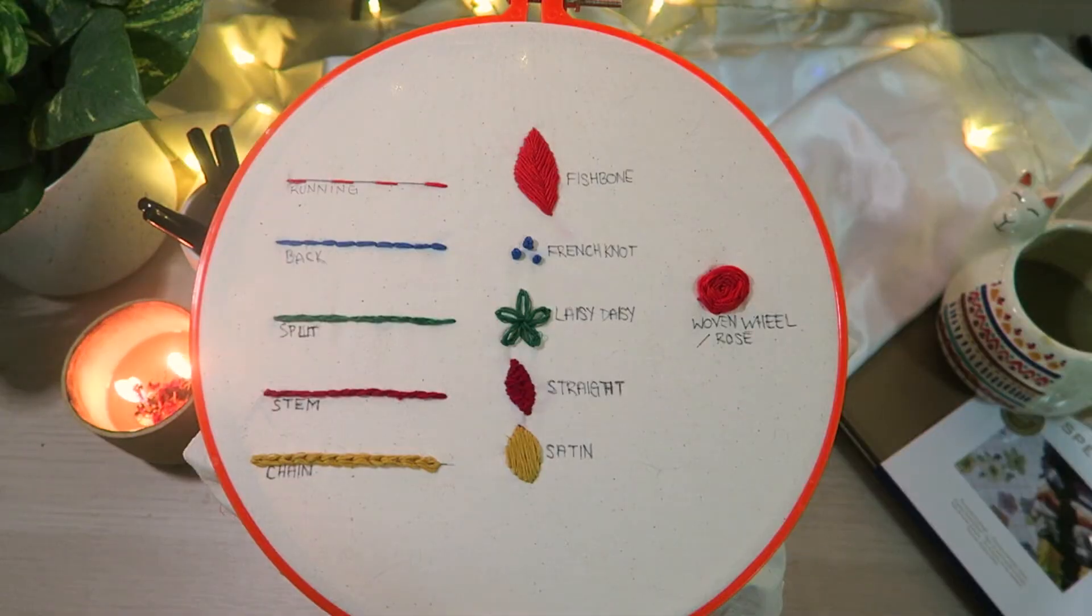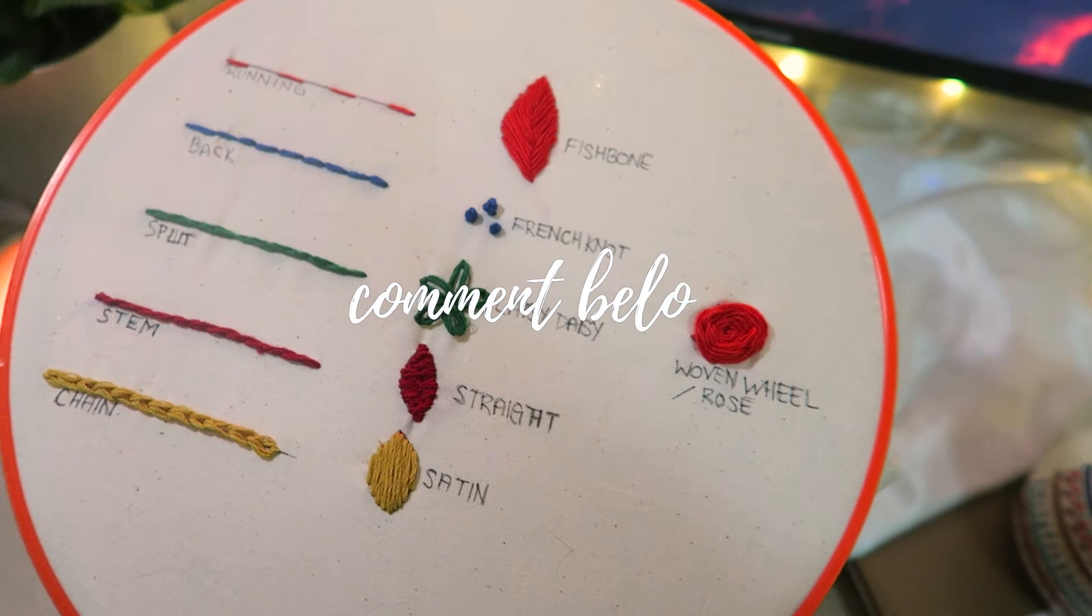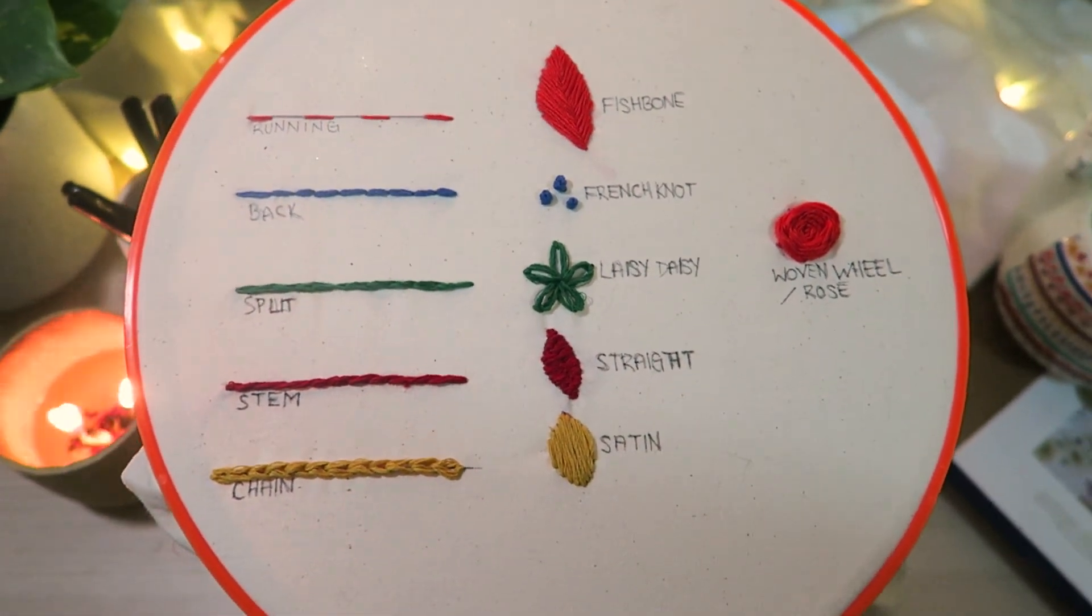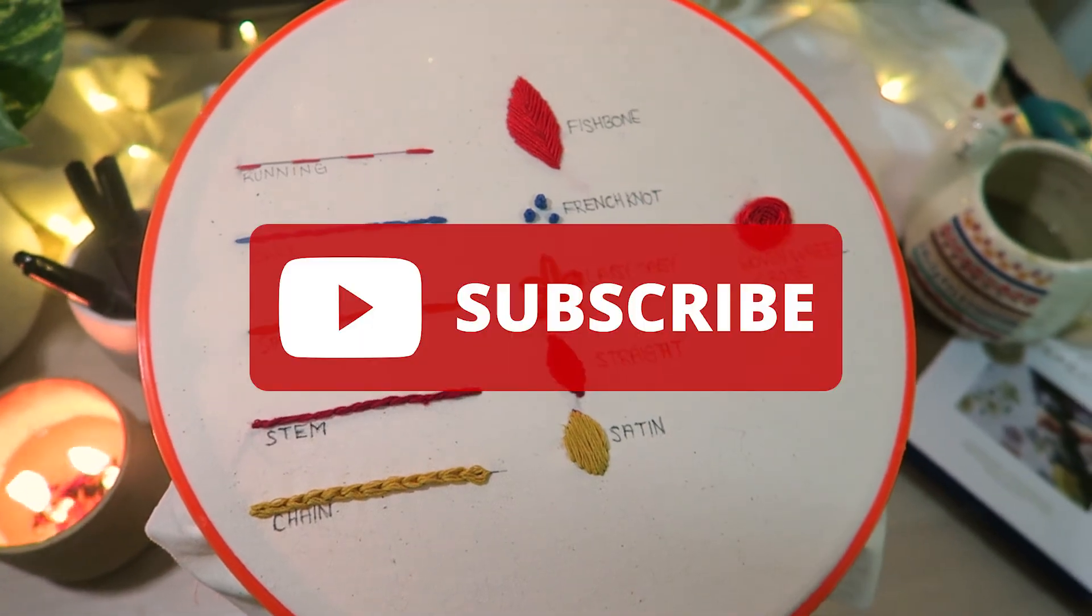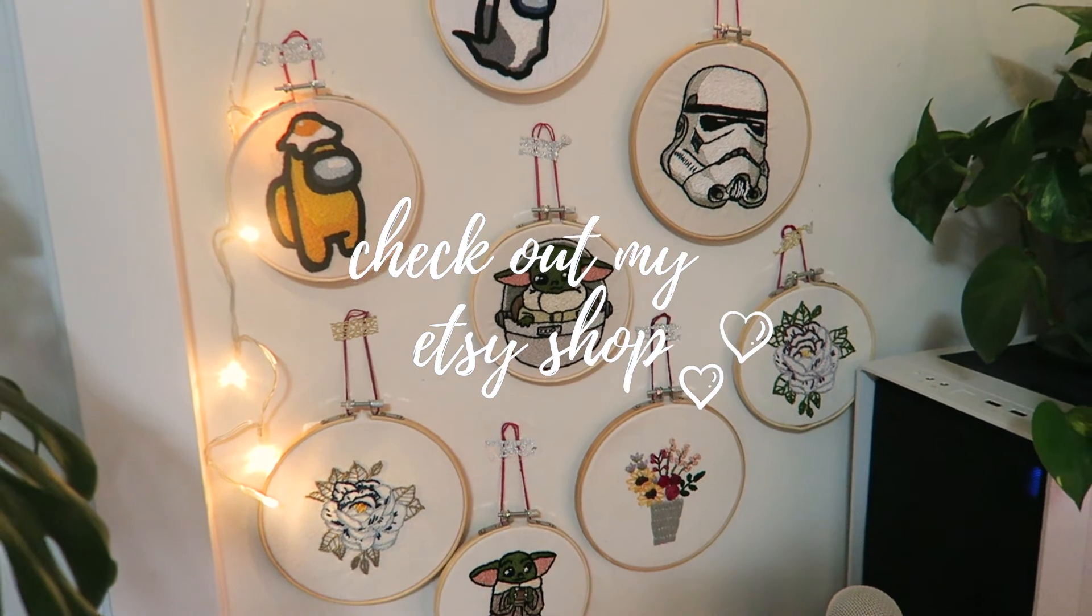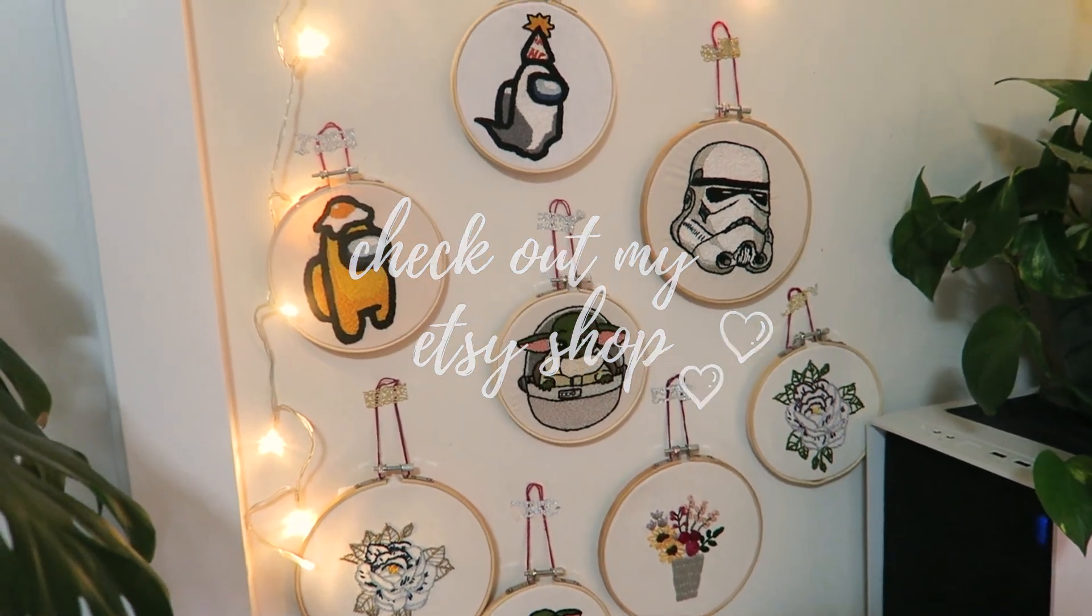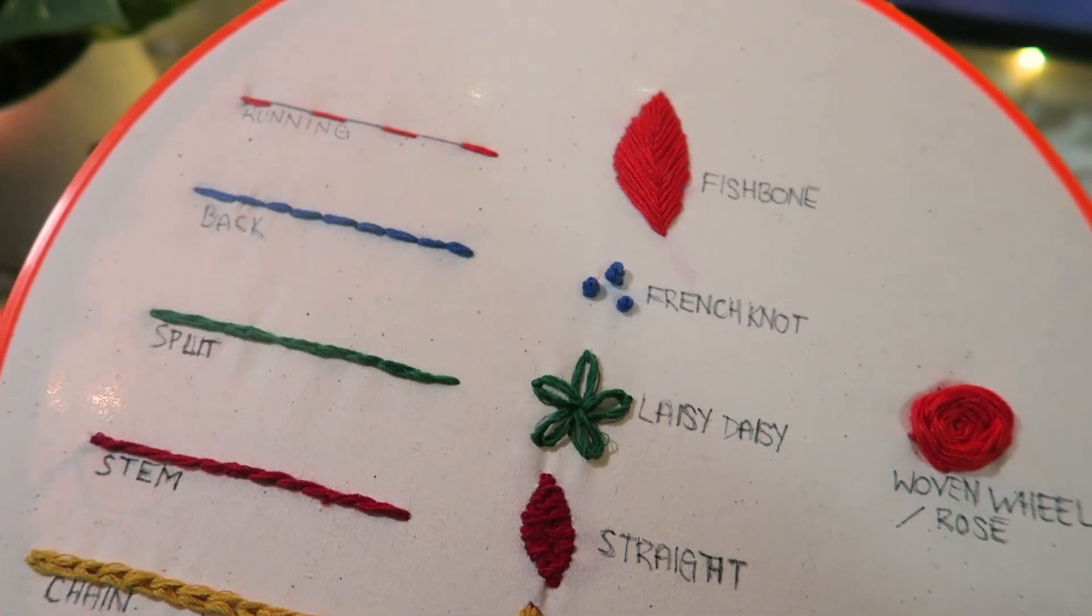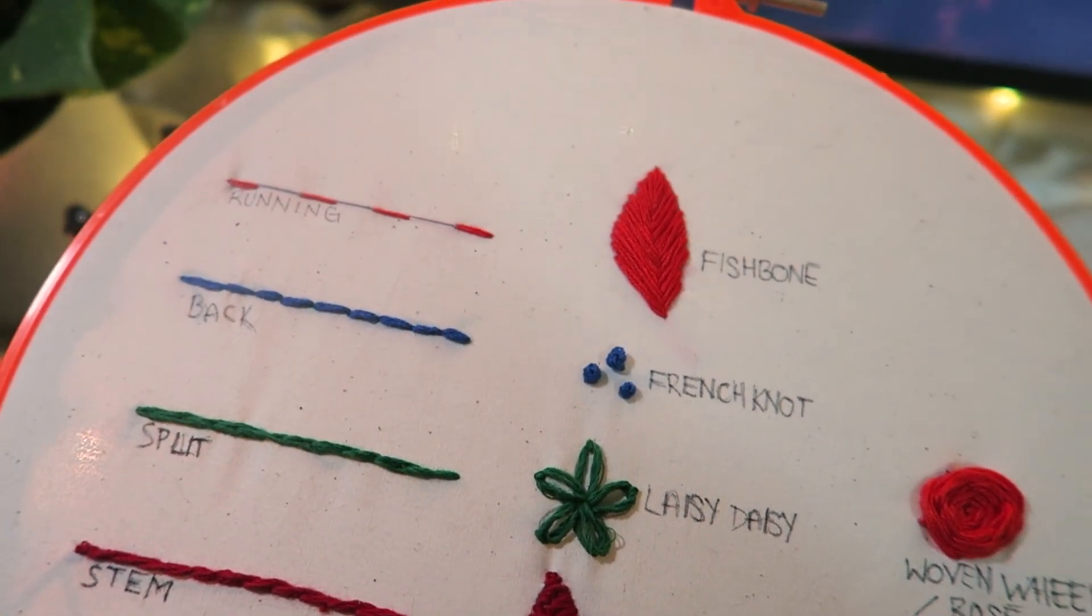And there you have it, 11 stitches perfect for beginners. Comment below and let me know which stitch is your favorite. If you enjoyed this video make sure to give it a thumbs up and subscribe so you don't miss future embroidery videos. Also make sure to check out my Etsy shop for printable PDF embroidery patterns, the link is down below in the description. I will see you all next time and remember have fun, bye.